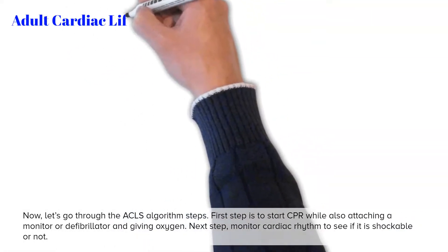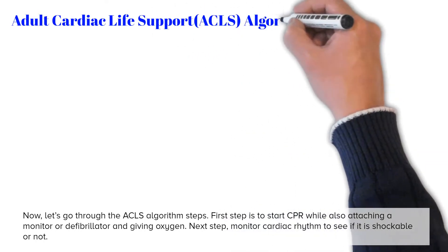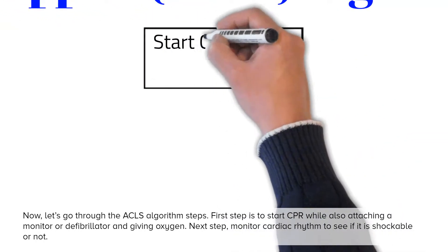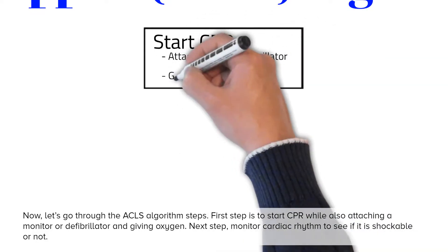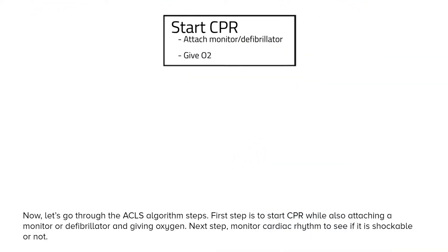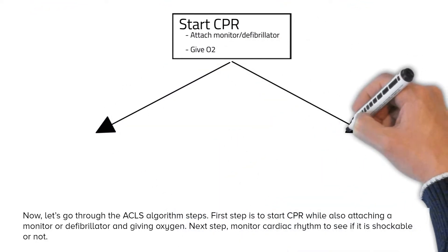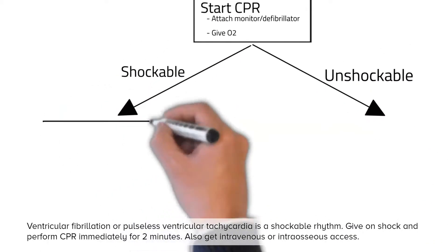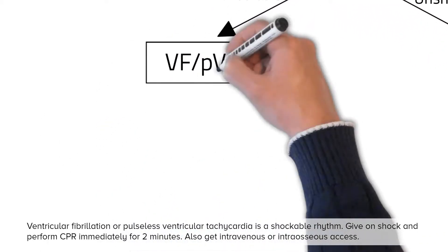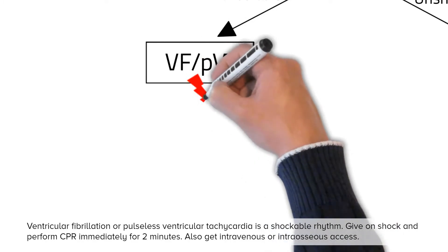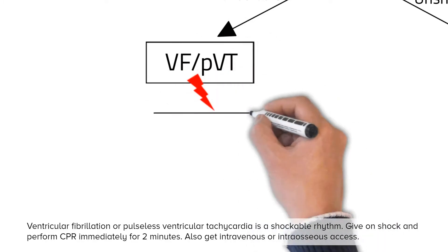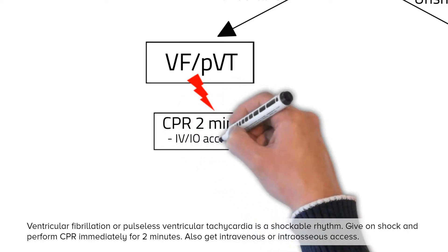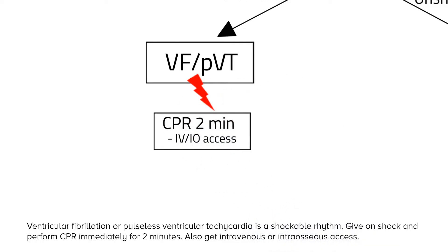Now let's go through the ACLS algorithm steps. The first step is to start CPR while also attaching a monitor or defibrillator and giving oxygen. Next, monitor the cardiac rhythm to see if it is shockable or not. Ventricular fibrillation or pulseless ventricular tachycardia is a shockable rhythm. Give one shock and perform CPR immediately for 2 minutes, and also get intravenous or intraosseous access.